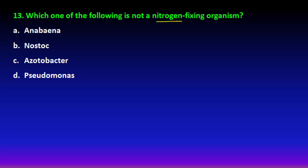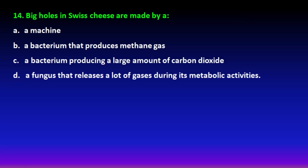Next question: which of the following is not a nitrogen-fixing organism? Anabaena, Nostoc, and Azotobacter are nitrogen-fixing organisms, but Pseudomonas is not. So option D is the right answer for question number 13.